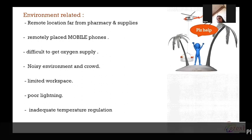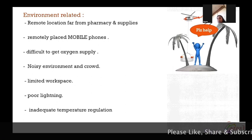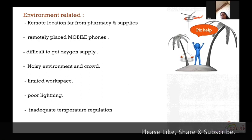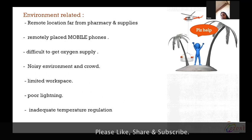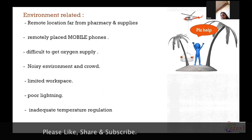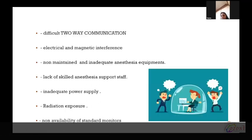Environment-related challenges include remote location, far from pharmacy and supplies. Sometimes CT and MRI are only diagnostic centers not attached to any hospital. Remotely placed mobile phones also pose a challenge because there is no two-way communication or no way to call for help. Difficult to get oxygen supply, noisy environment and crowd, limited workspace. The machines are very large in a small room, so airway or IV lines are not easily accessible. Poor lighting, inadequate temperature regulation, difficult two-way communication, electrical and magnetic interference by the machines, non-maintained or inadequately maintained anesthesia equipment, lack of skilled anesthesia support staff, inadequate power supply, radiation exposure, and non-availability of standard monitors.